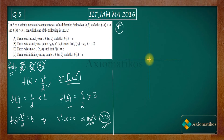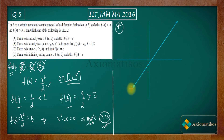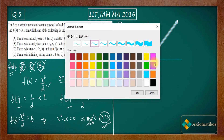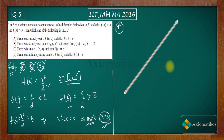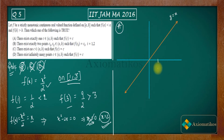Let me draw the line y = x. So this is your line y = x. Let us say this is point a and this is point b on the x-axis.